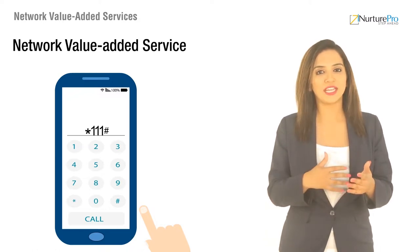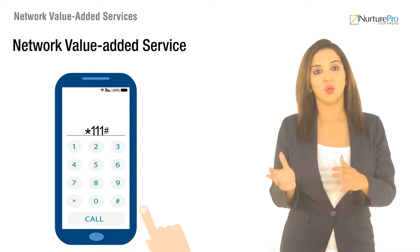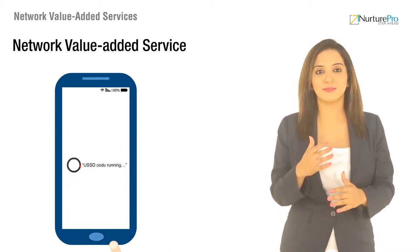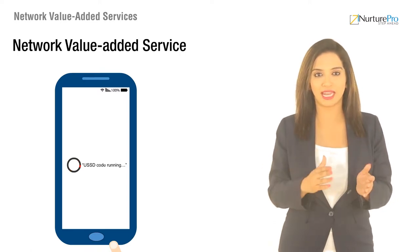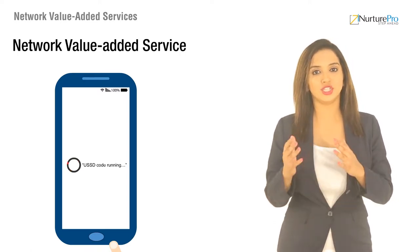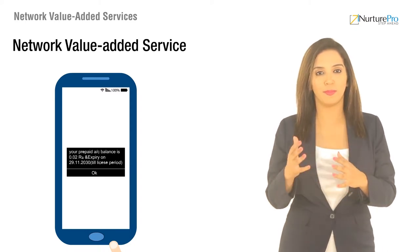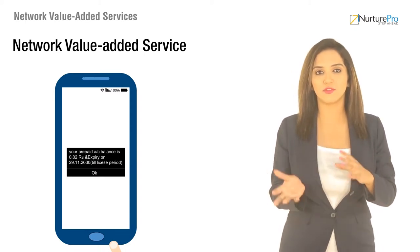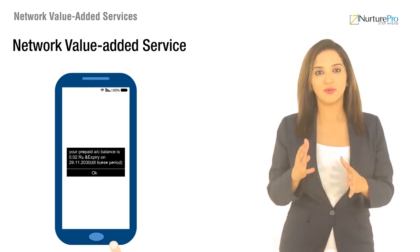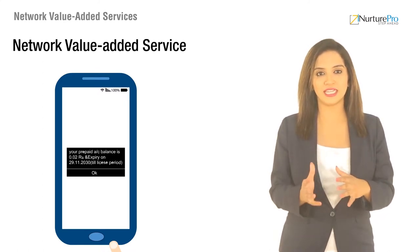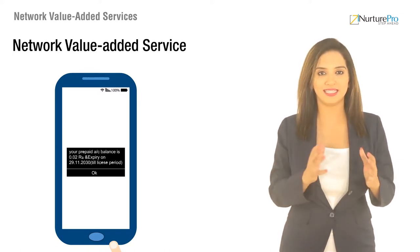What happens when you dial star 111 hash? What you will see is a text message on your phone that reads 'USSD code running,' and in a short while you will receive the details about your balance and other services from your service provider. The USSD code that you have entered into your phone is an example of a Network Value Added Service.